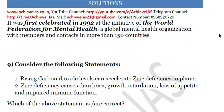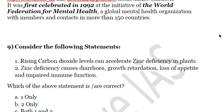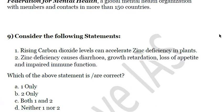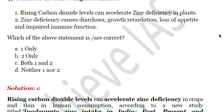The ninth question: 'Consider the following statements.' First: rising carbon dioxide levels can accelerate zinc deficiency in plants. Second: zinc deficiency causes diarrhea, growth retardation, loss of appetite, and impaired immune function. Both statements are correct. Carbon dioxide levels can accelerate zinc deficiency in crops, and this deficiency moves up the food chain, affecting the immune systems of human beings and causing diarrhea, growth retardation, and loss of appetite.